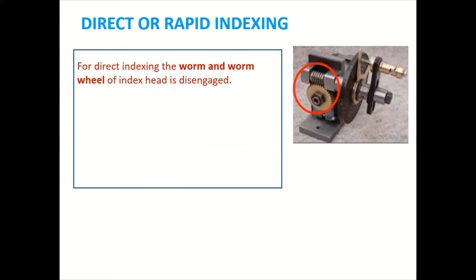It means that in direct indexing, the index plate is directly mounted on the dividing head spindle. Means there is no worm and worm wheel in the rapid indexing and if it is then we can disengage also.